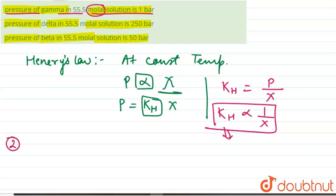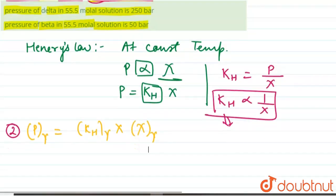So according to the given option, we can say that partial pressure of gamma equals KH of gamma into mole fraction of gamma. That is the concentration of gamma if we calculate.